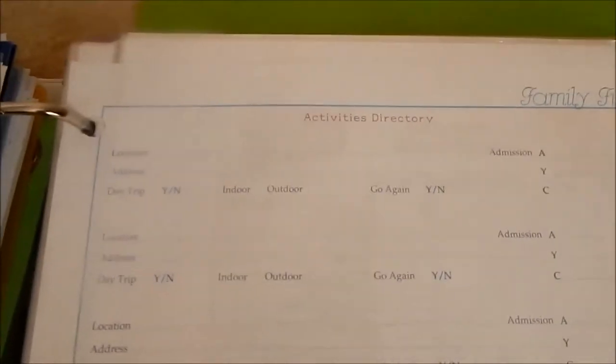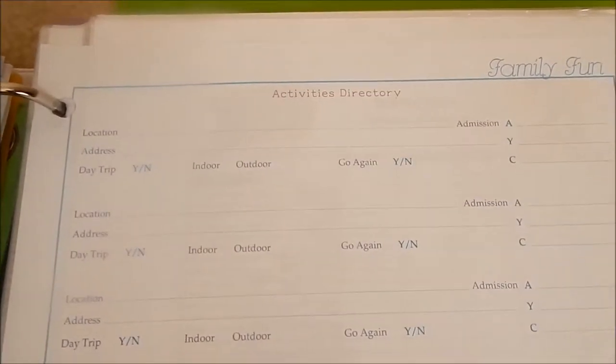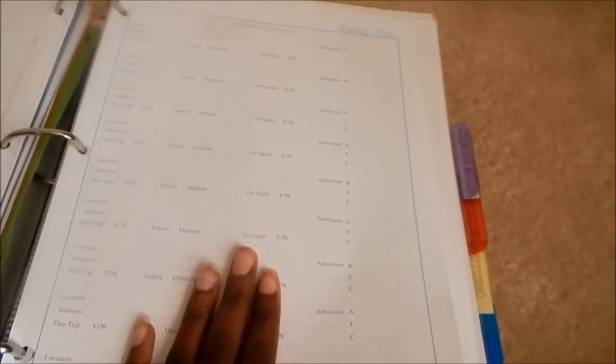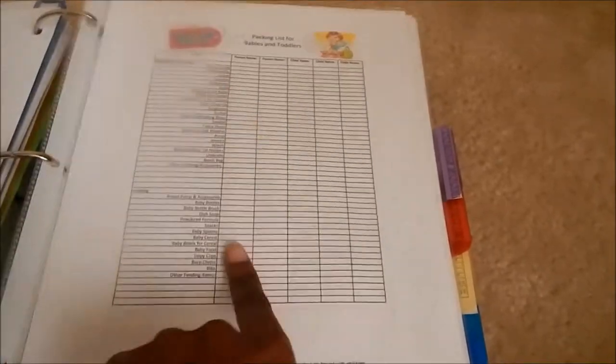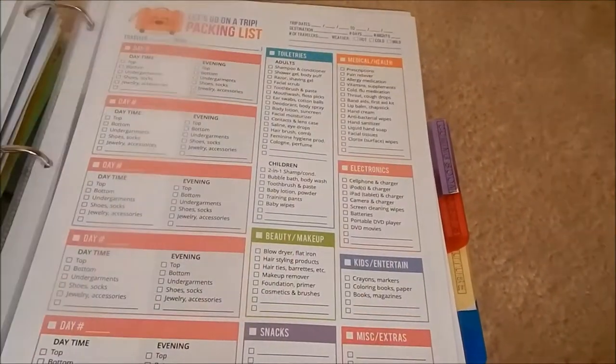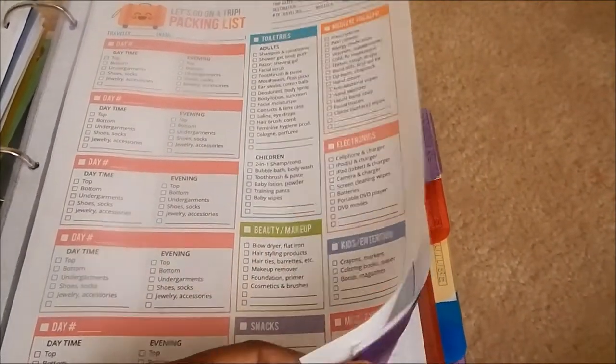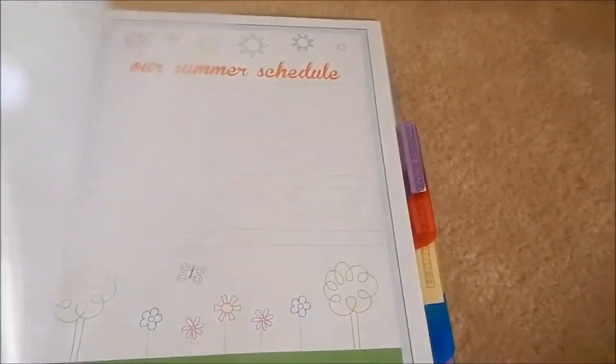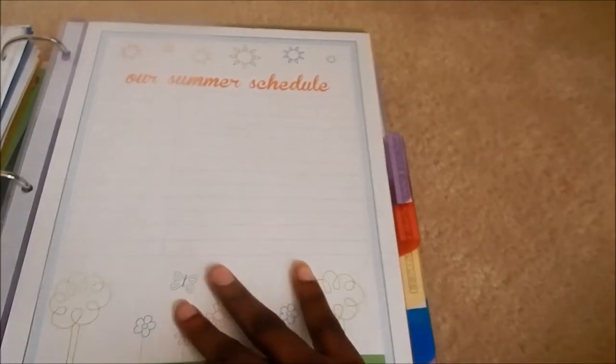This sheet is for if your family finds a place you just love, you write it down so you remember it, especially if you're going to that area. I also have a travel packing guide for babies and toddlers, and our summer schedule.